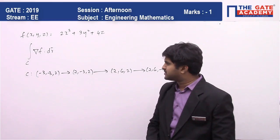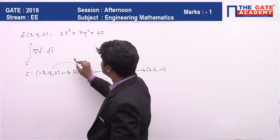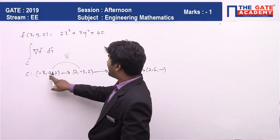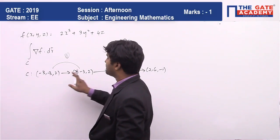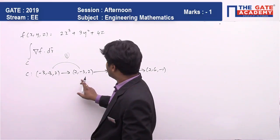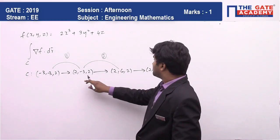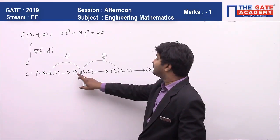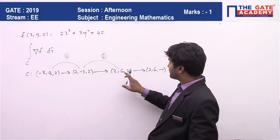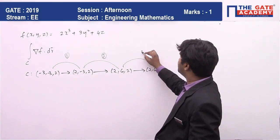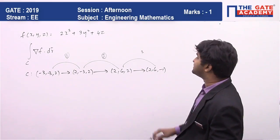If you observe carefully, in the first part the values of y and z are the same, only x is changing. In the second part, the value of y is changing whereas x and z remain the same. In the third part, only the value of z is changing, the remaining x and y remain the same.